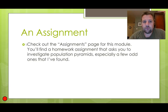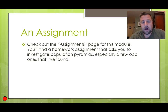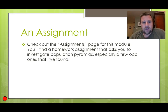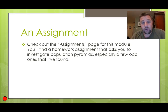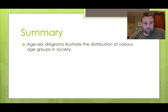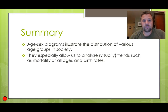So in this module I have an assignment for you. You can download it and follow the instructions — you're going to look up a few different population pyramids that have some unique features, and figure out what's going on. They're fairly obvious if you do some quick searching online, but they're really unique examples showing how you can observe what's going on in a society just based on features of the population pyramid. In summary, age-sex diagrams illustrate the distribution of various age groups in society and allow us to analyze trends in mortality and birth rates.